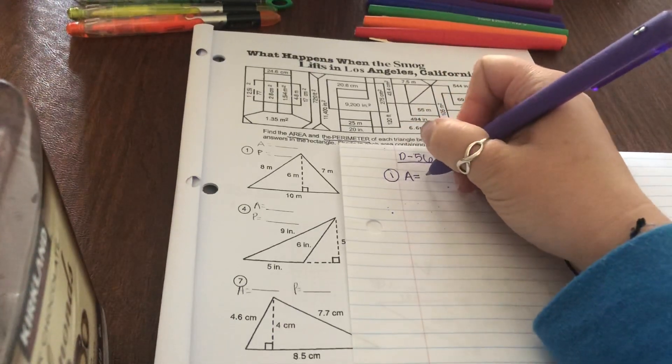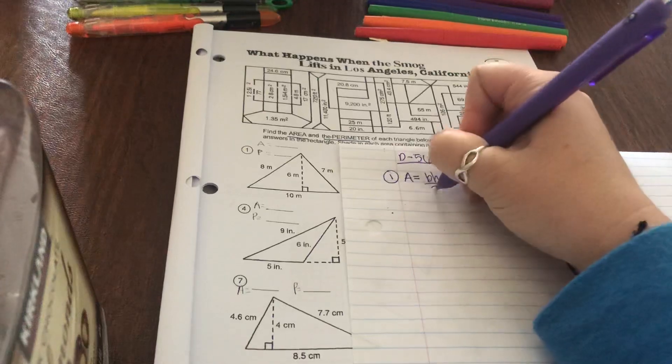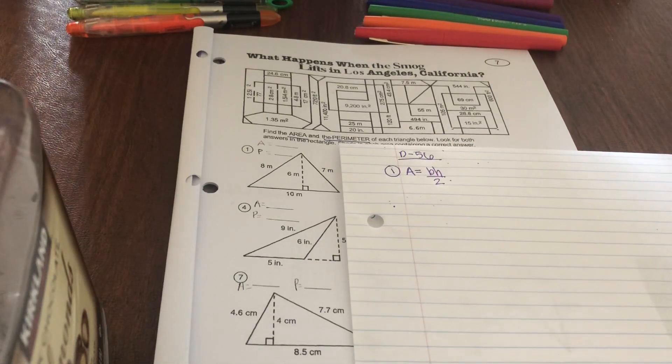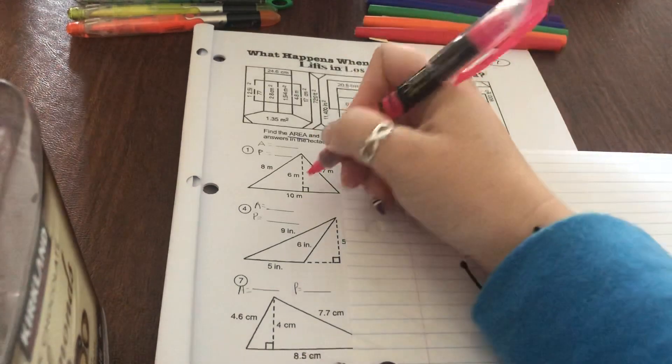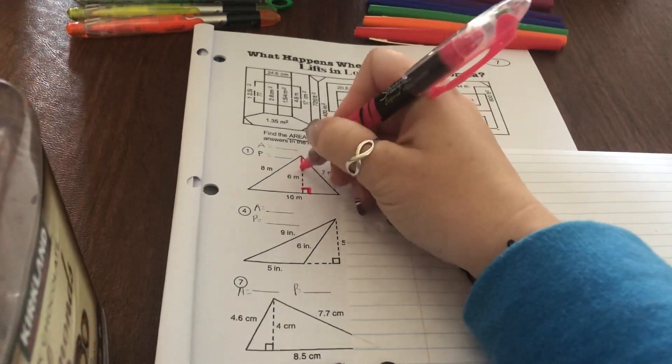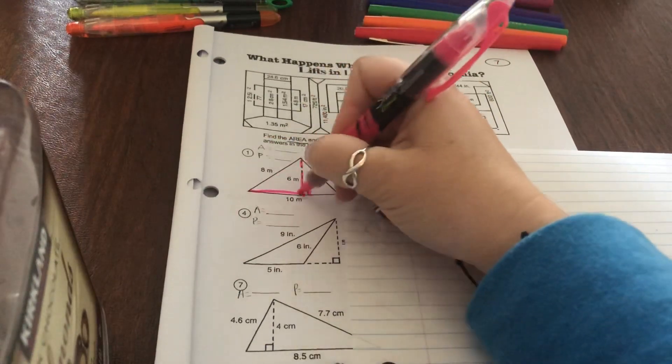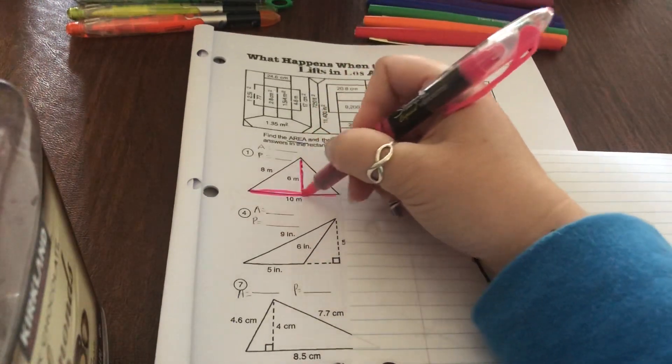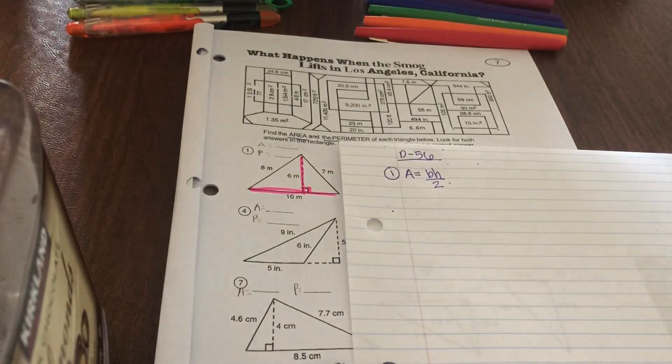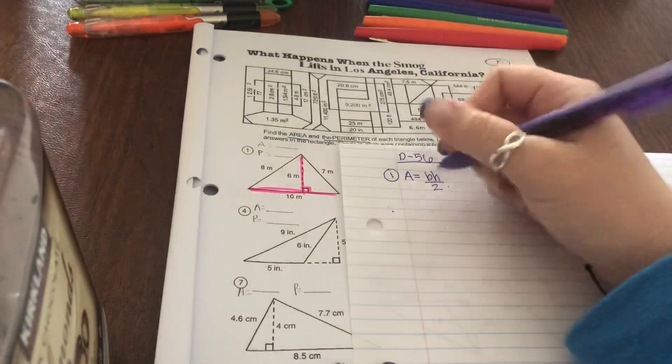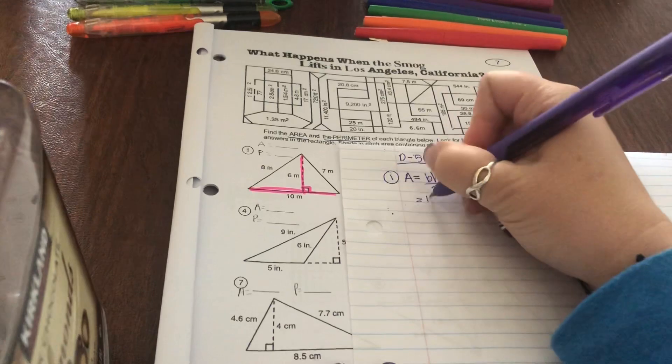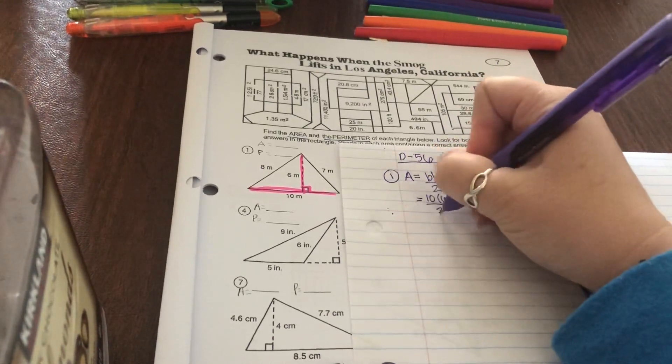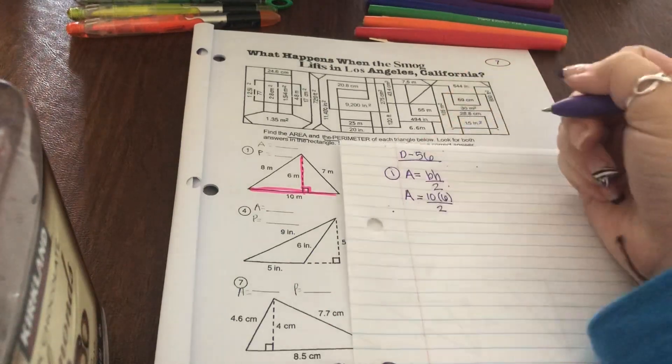For the area of a triangle it's base times height divided by 2. Go ahead and take a look for that little box that indicates a right angle because that connects your perpendicular height to your base. So that means my height is 6 and my base is that 10. So I'm going to plug those in. My base was 10, my height was 6. I'm going to divide that by 2 and that is equal to the area of my triangle.